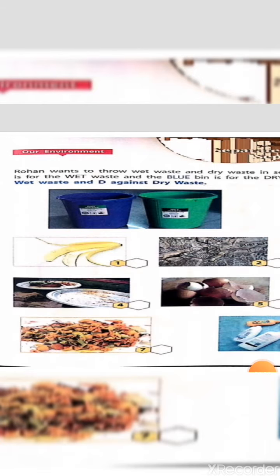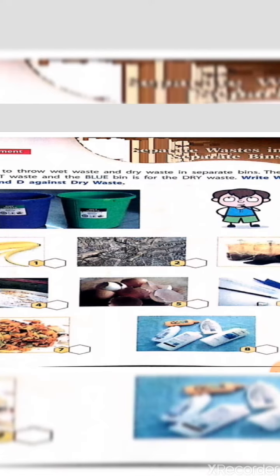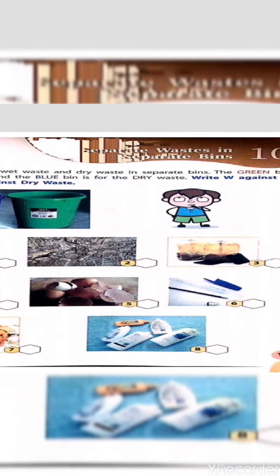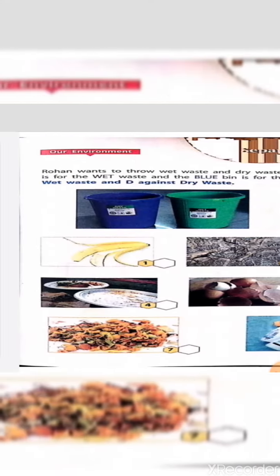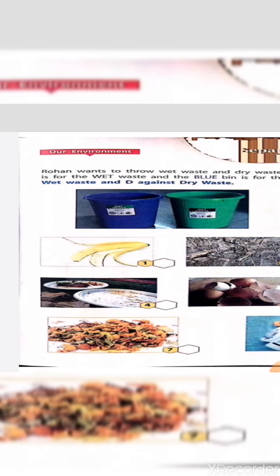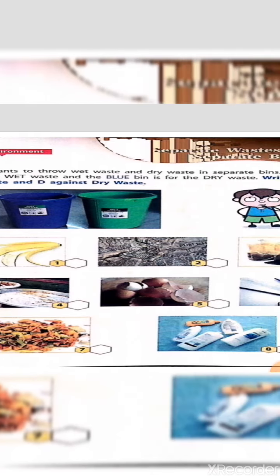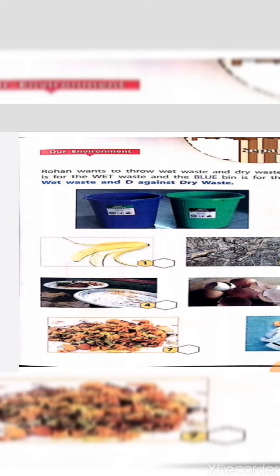Now let us read what is written here. Rohan wants to throw wet waste and dry waste in separate bins. The green bin is for the wet waste and the blue bin is for the dry waste. Write W against wet waste and D against dry waste.